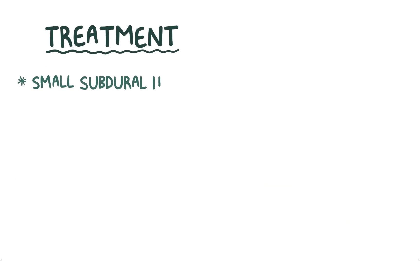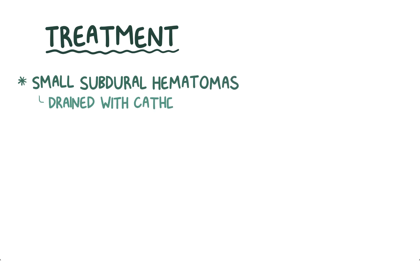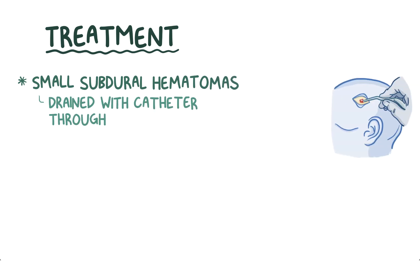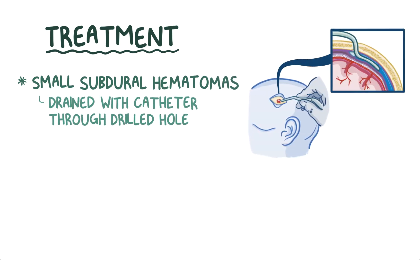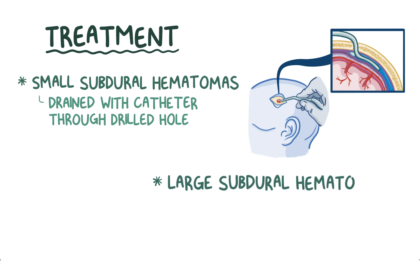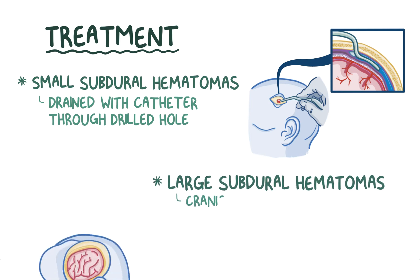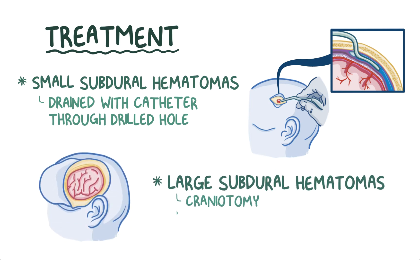Small subdural hematomas are drained by placing a small tube called a catheter through a drilled hole in the skull. Large subdural hematomas require a craniotomy, which is when part of the skull bone is removed in order to remove the accumulated blood below.